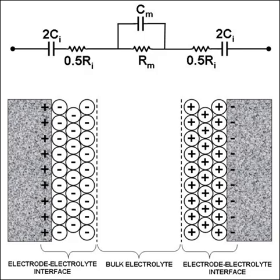The resistance R's accounts for the electrical conductivity of the bulk medium while the capacitance C's is due to the capacitive double layer at the electrode-electrolyte interface.